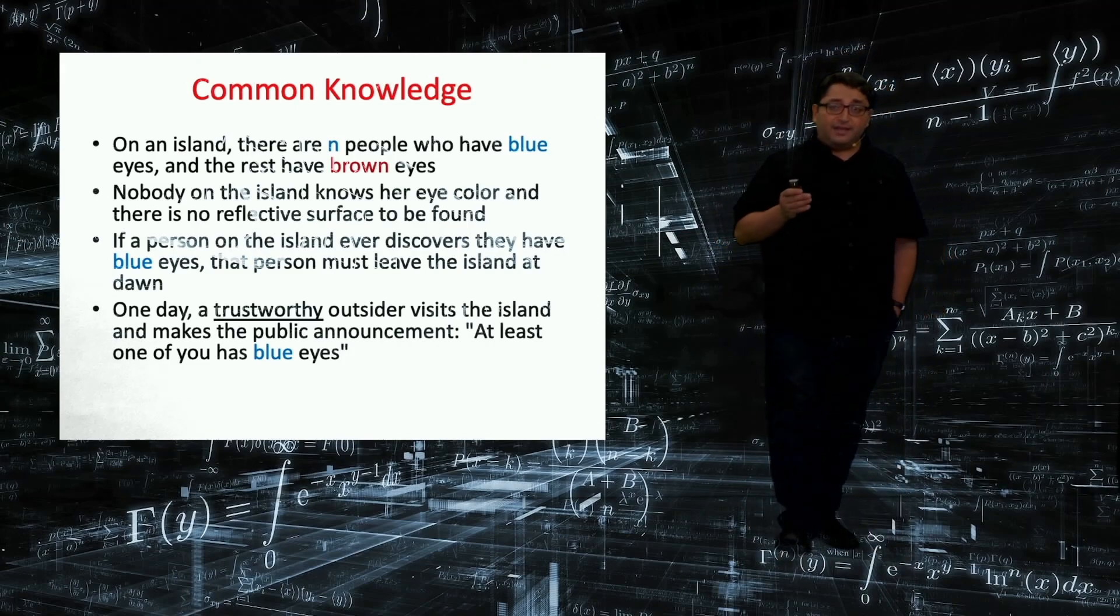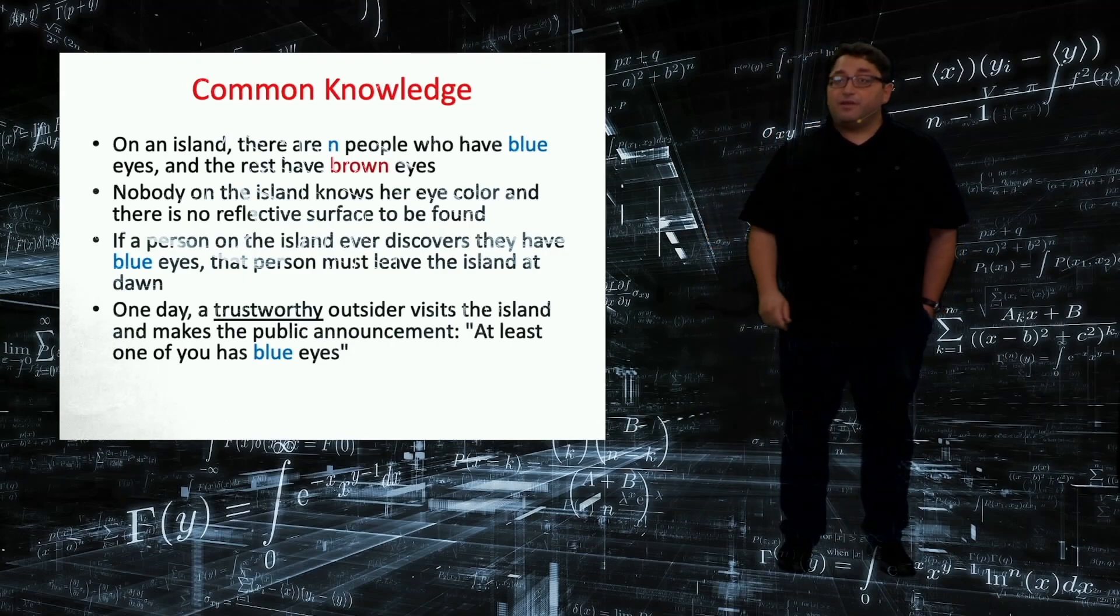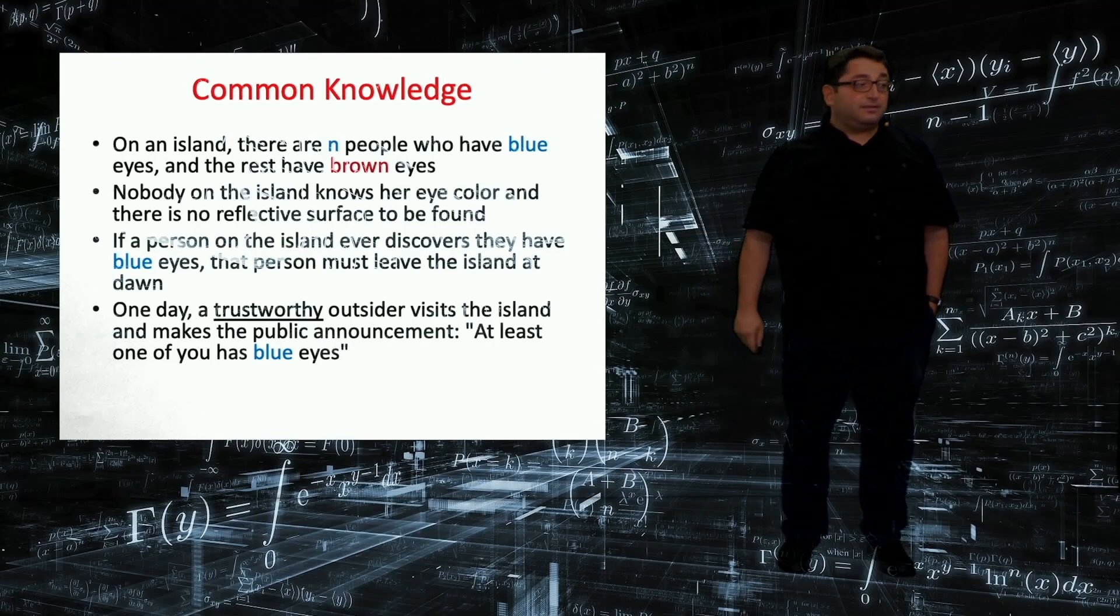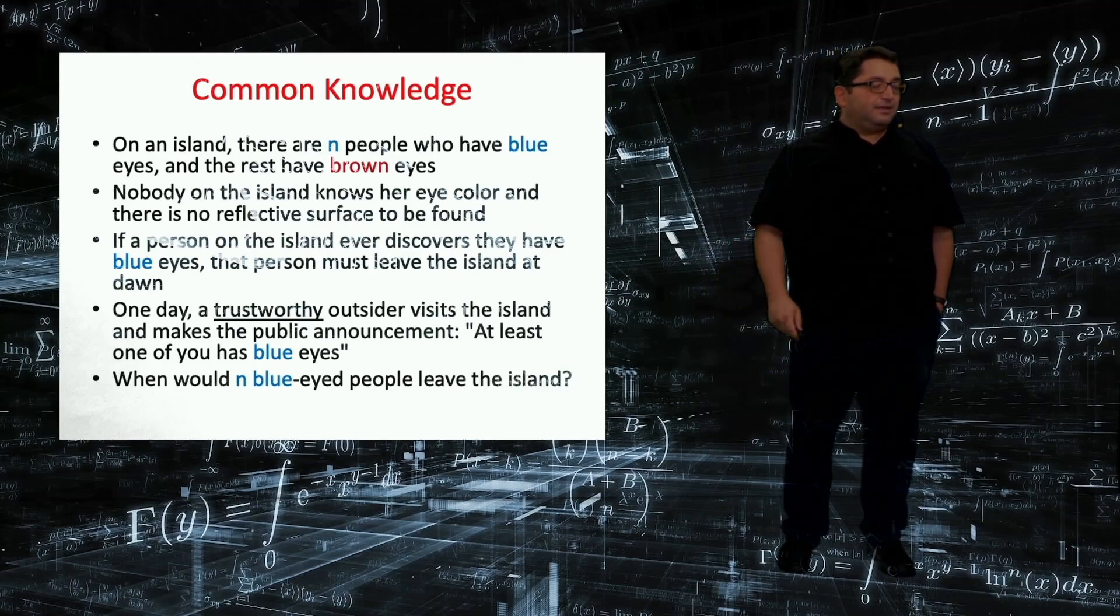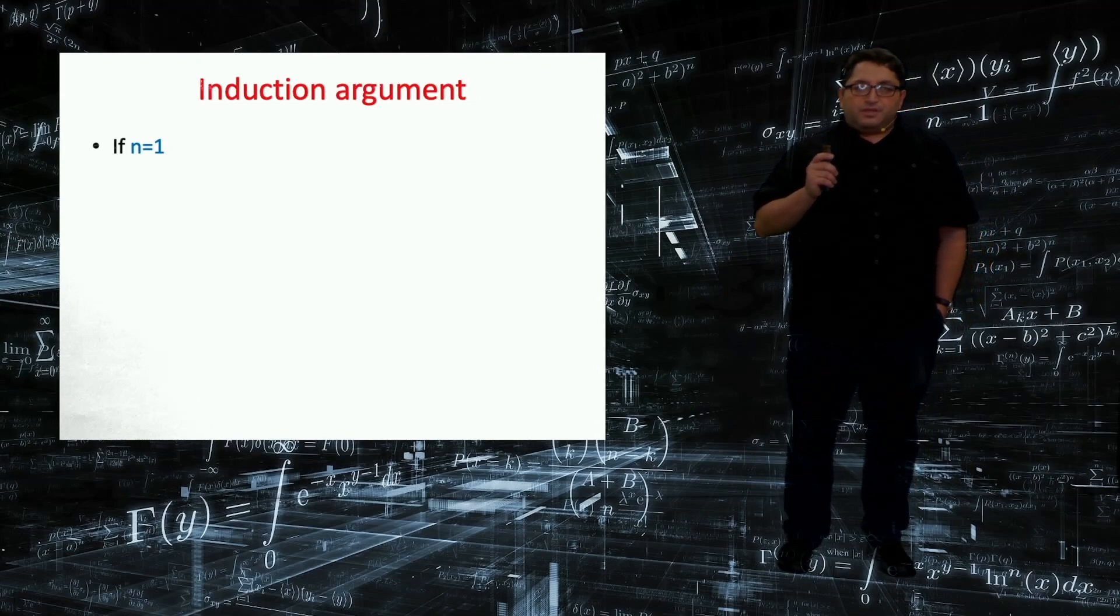So for that, let's start with only one person having blue eyes, then what would happen? So say n is one.